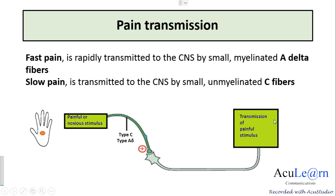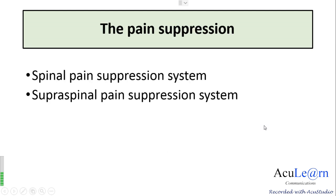So this is how a painful stimulus is transmitted to the somatosensory cortex. Pain can be suppressed in the dorsal horn of the spinal cord before the stimuli are sent to the ascending tracts.